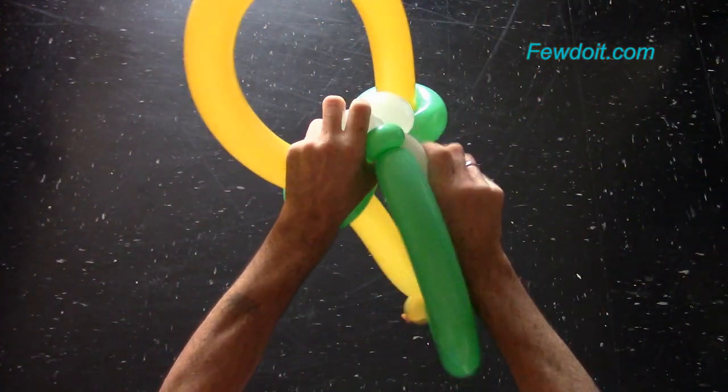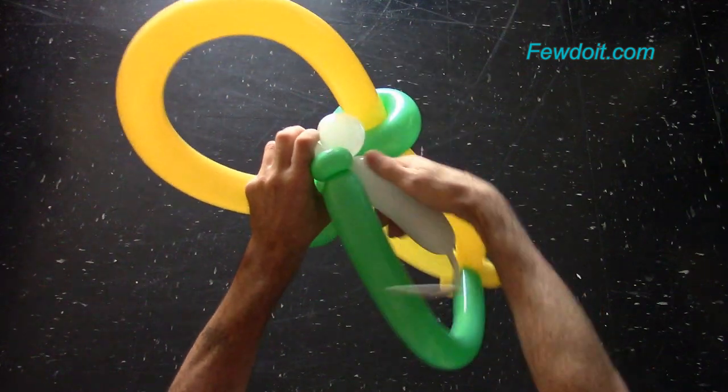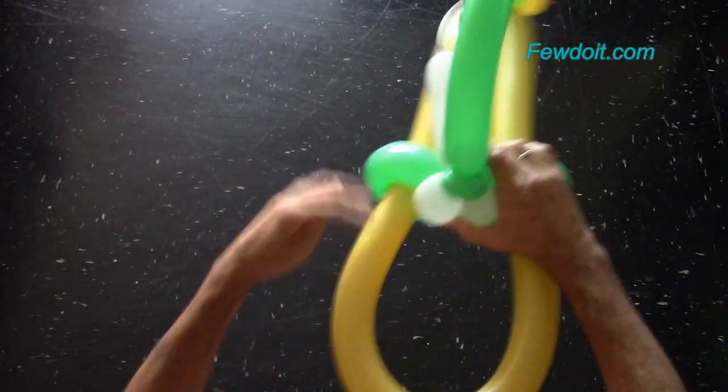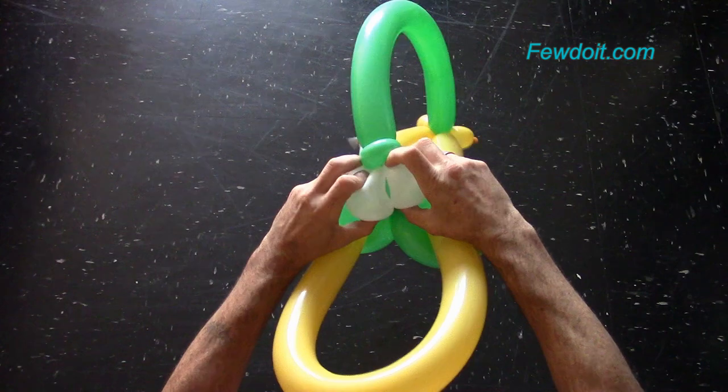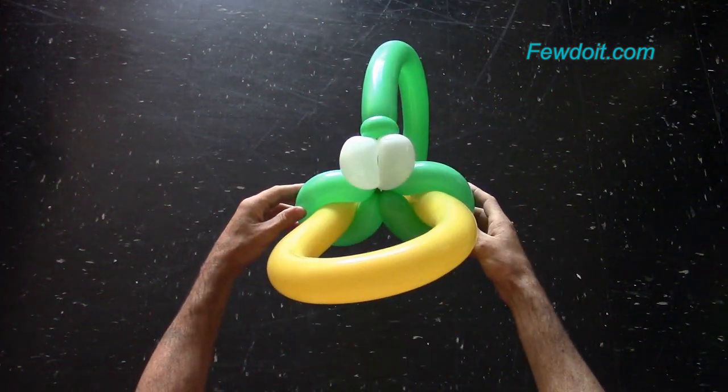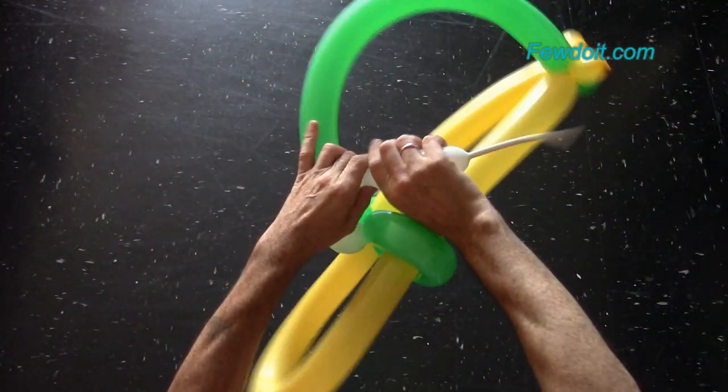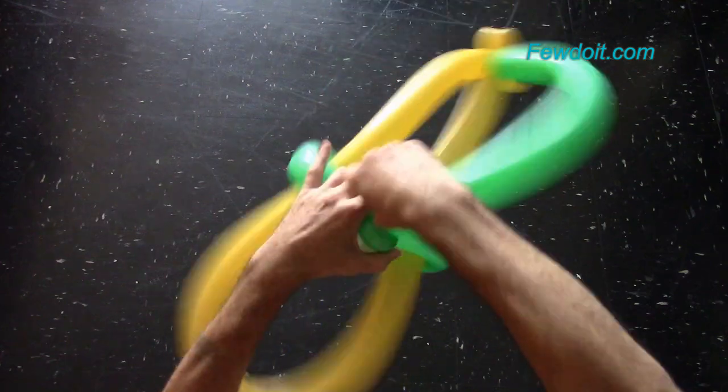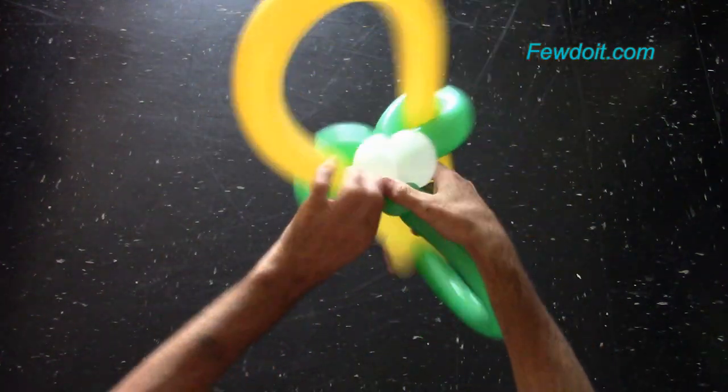Twist the second white soft bubble, make it the same size as the first white bubble. Lock the free end of the second white bubble around the fourth green bubble. We have made the eye bubbles, cut off the rest of the white balloon, tie off the end.